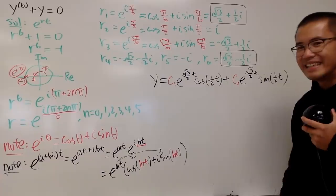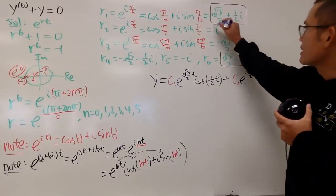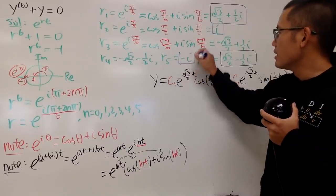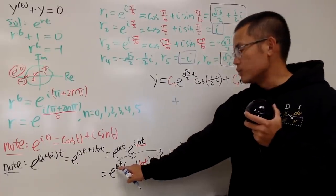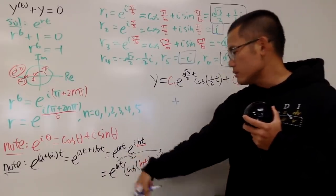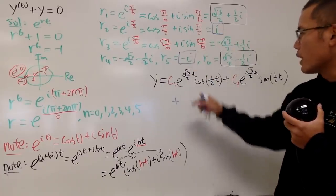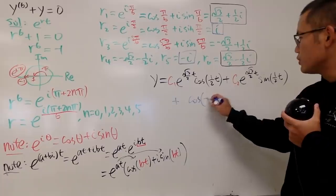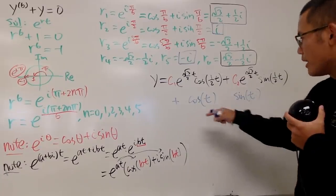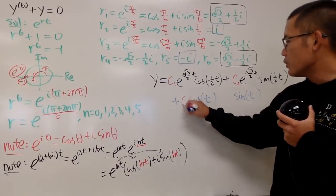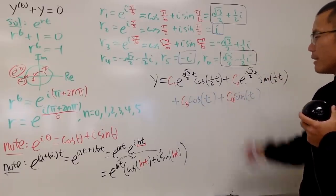Now we have two parts done and four more to go. Let's do this in blue. We have i and negative i. In this situation, a is 0, because it's 0 + 1·i. So we don't have the exponential e part. We just have cosine of 1·t, which is just cos(t), and then sine of 1·t, which is just sin(t). Don't worry about the i or negative signs, because we multiply this by a constant c3, and the other one by c4, and then add them up.